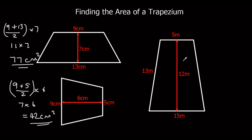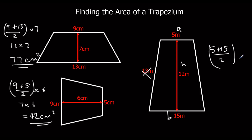And here, the perpendicular height is this one. These two are A and B. The thirteen is there to mislead us — don't use it. We've got five plus fifteen over two, times twelve. Five and fifteen is twenty, half of that is ten. So ten times twelve is a hundred and twenty metres squared.